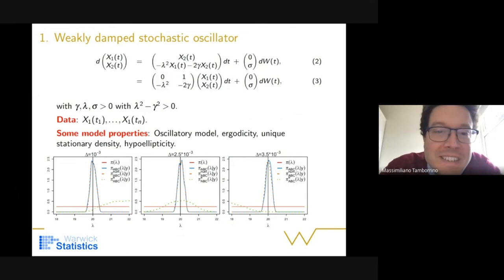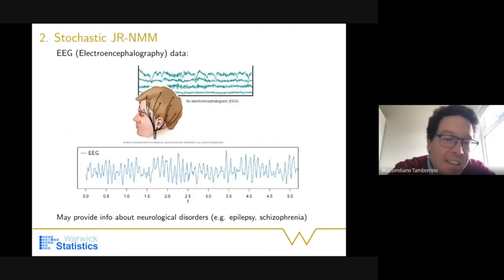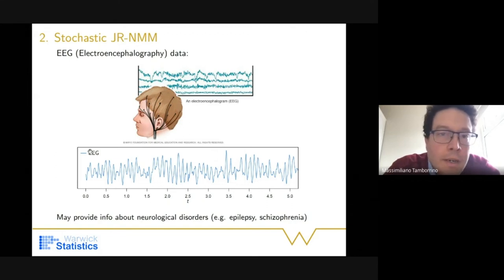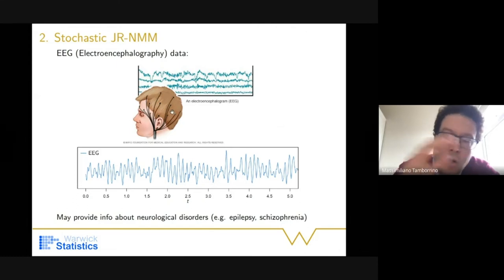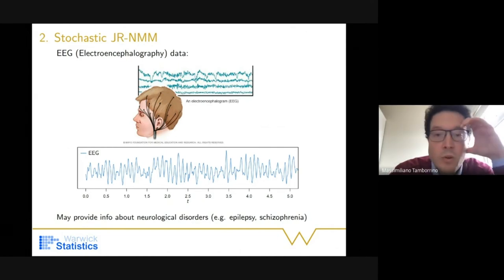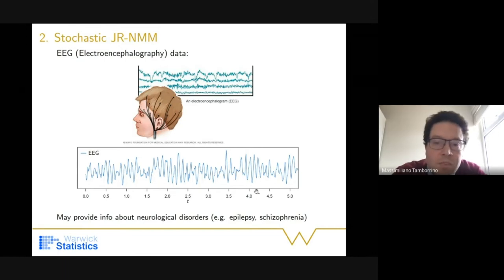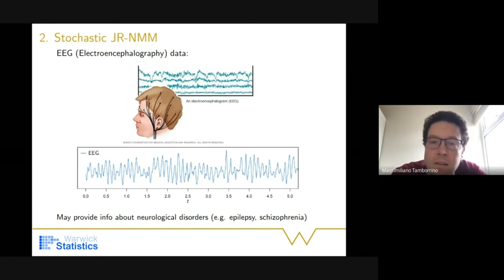This example shows that using a numerical scheme that does not preserve model features — and embedding it into a simulation-based scheme — can give very wrong results. The wrong results are due to simulating data from the wrong model and basing all inference on it, yielding biased results. An audience member asks how you would know whether a model is wrong if you don't have data generated from it. I'll come back to that in a moment with a real neuroscience application.